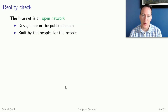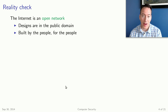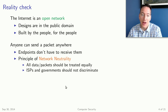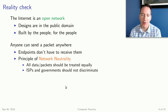So let's have a little bit of a reality check to see why this is the case. As we talked about in class, the internet is an open network. The designs are in the public domain, it's built by the people, for the people. Pretty much anyone can send a packet anywhere they want. On the other end, you don't have to receive those packets, but there's nothing filtering or stopping packets in general.